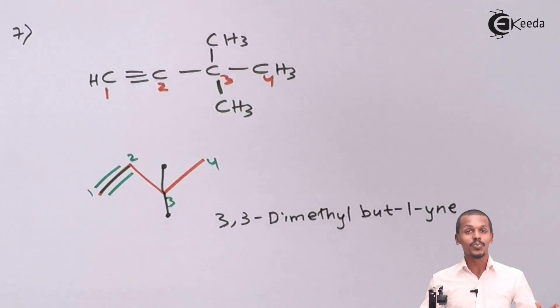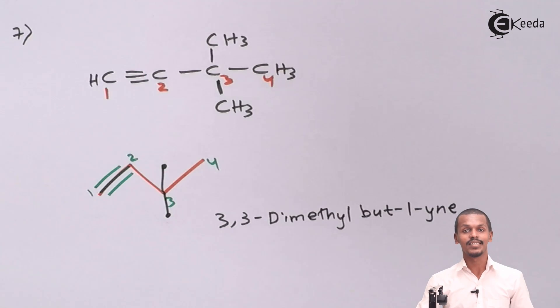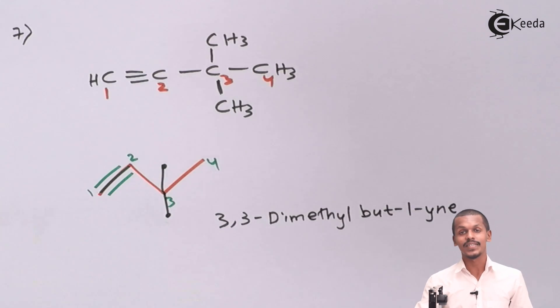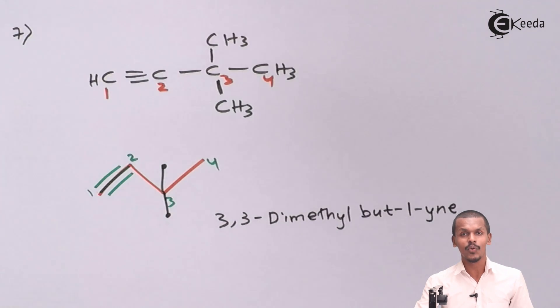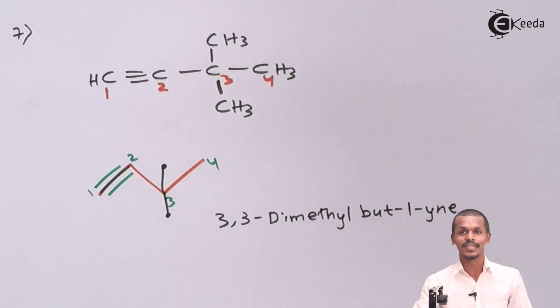These were all the isomers, along with their bond line formulas, for the molecular formula C6H10. Thank you for watching this video. I hope you understood it clearly — please share it with your friends and don't forget to subscribe to the channel.